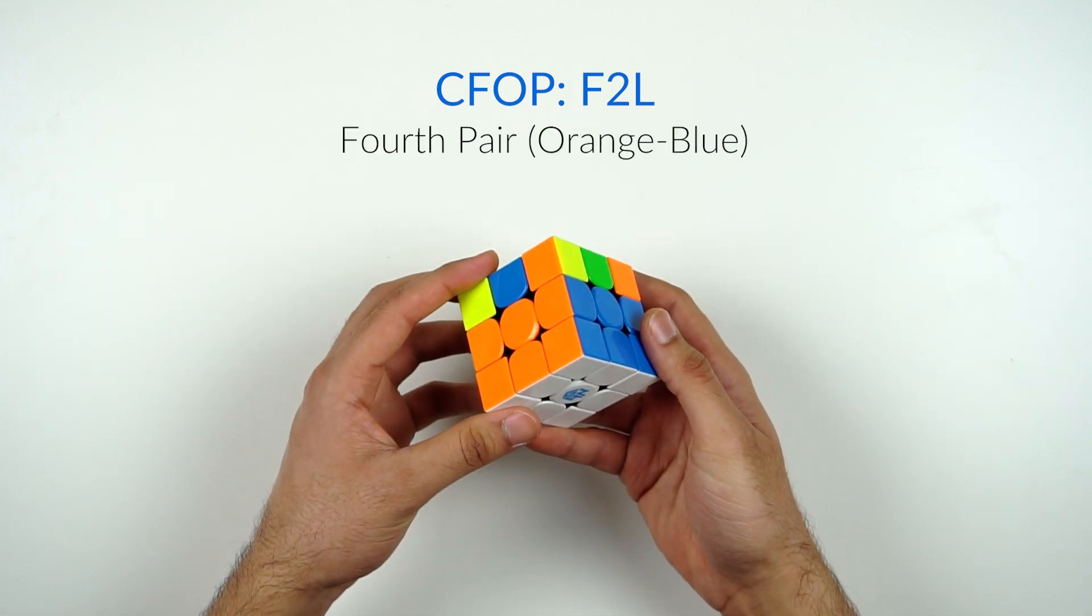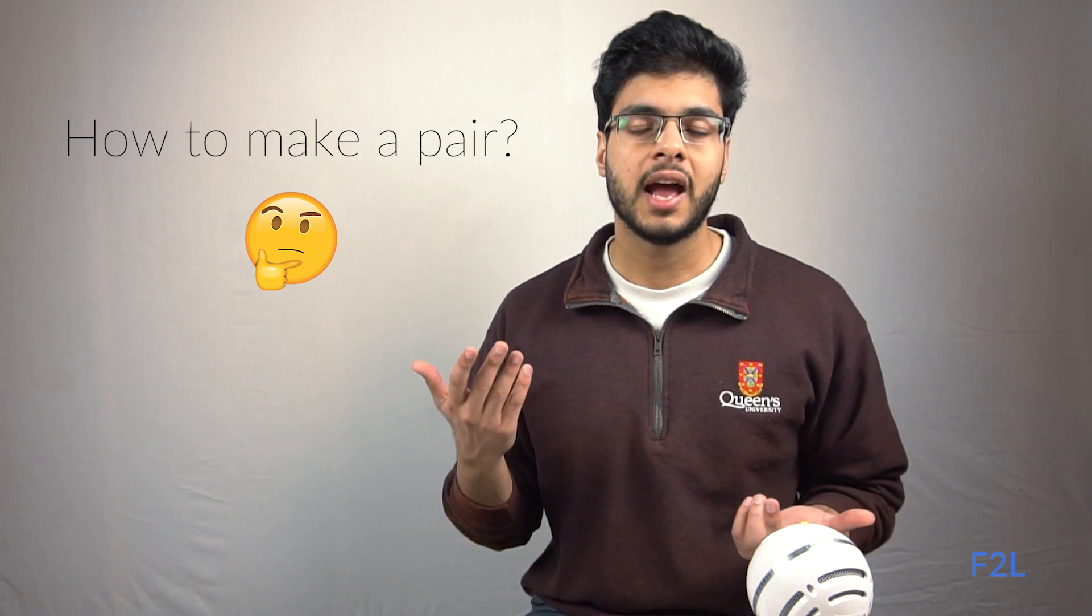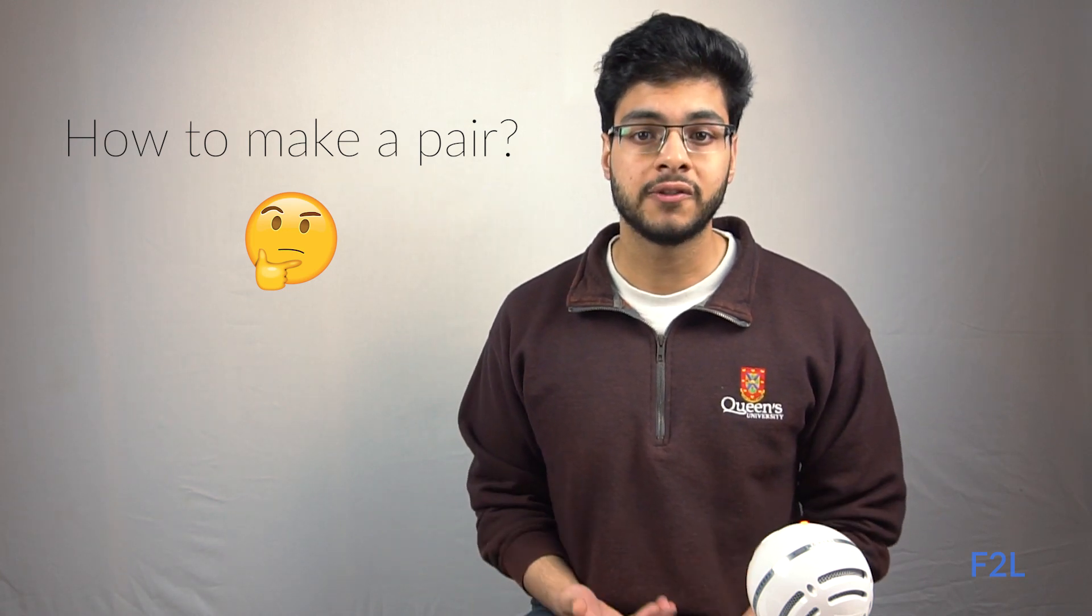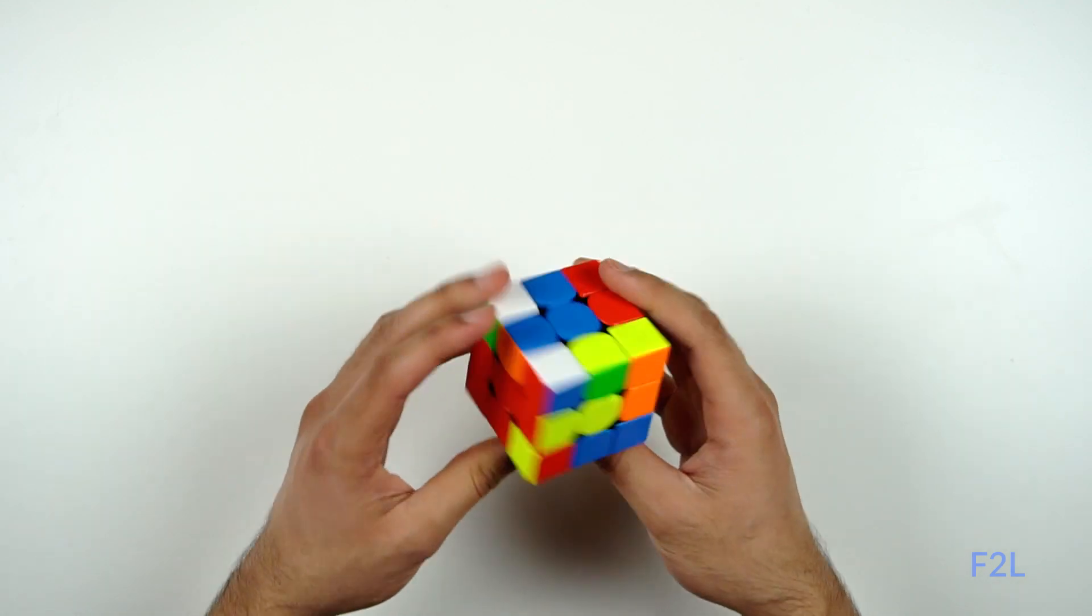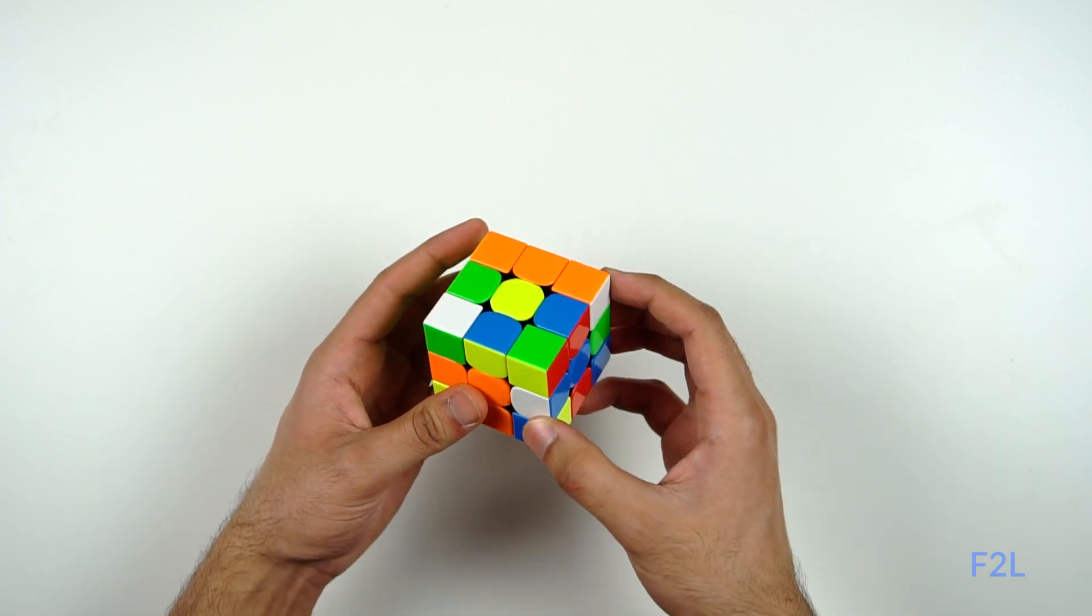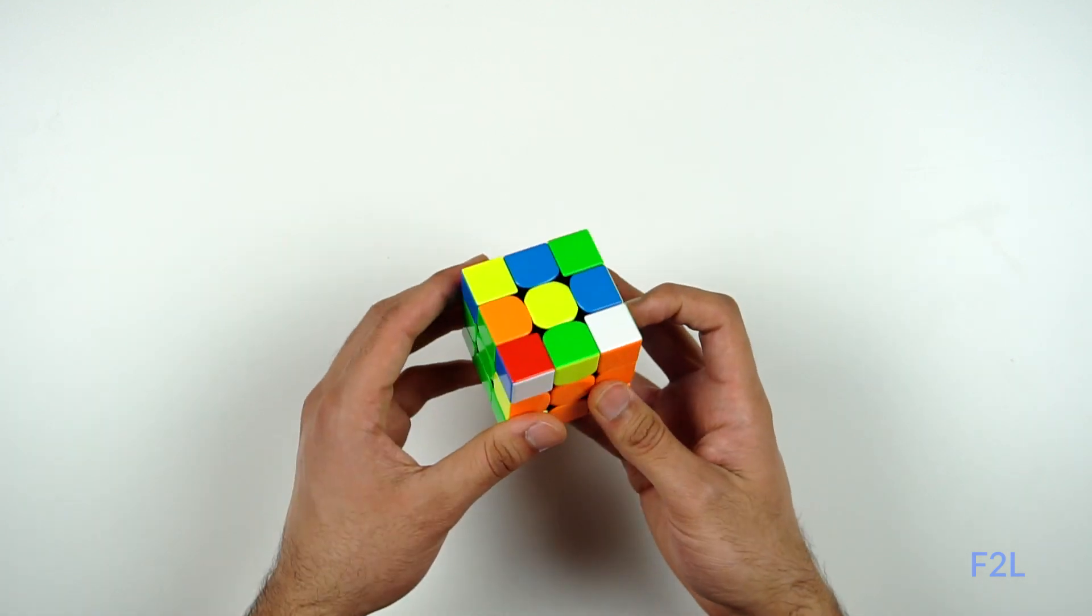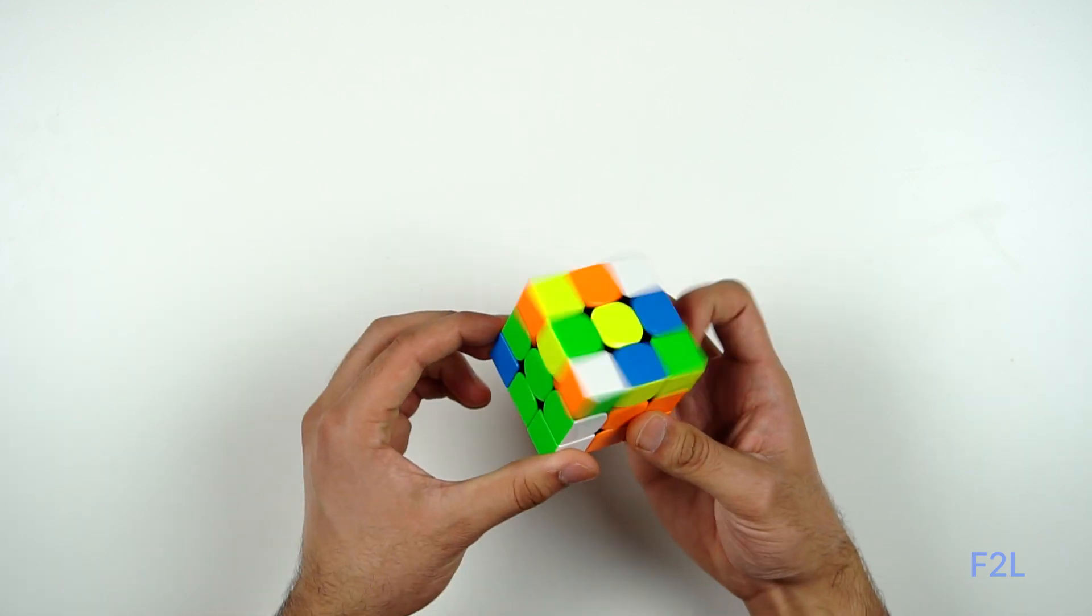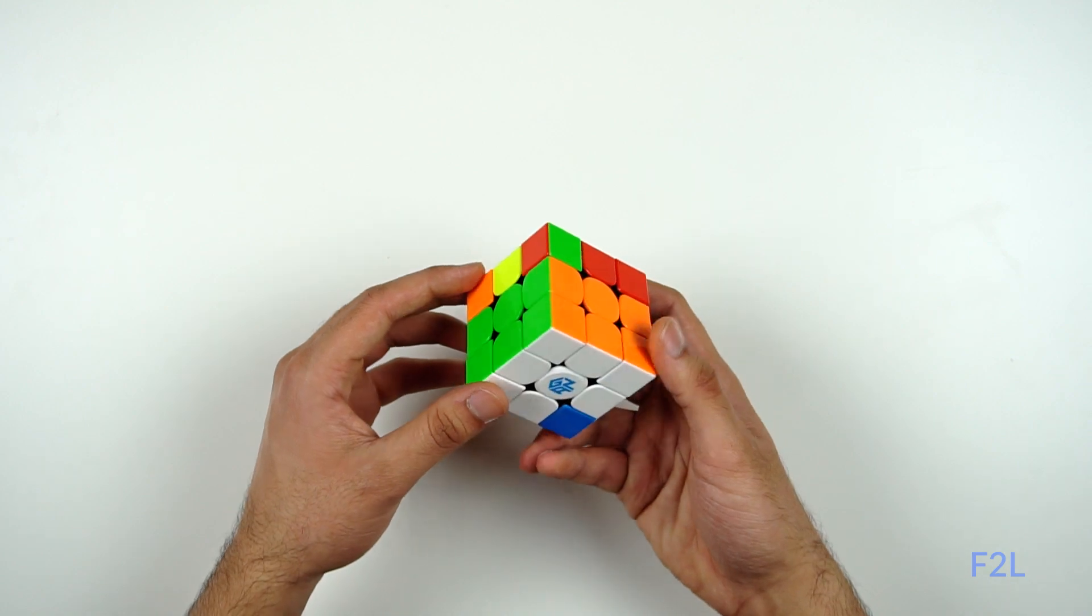Now the hard part with F2L is figuring out how to create these corner and edge pairs in the first place, and then also making sure that you're doing it efficiently, and not taking like a hundred moves to solve these four pairs. This can seem daunting at first, seeing as there are over 70 different scenarios that you can encounter in F2L. But similar to the cross, most people learn and solve F2L completely intuitively, which means they observe the pieces around the cube and rearrange them into a scenario that they know, so that they don't have to memorize like 70 different scenarios.